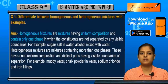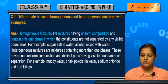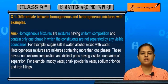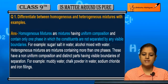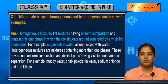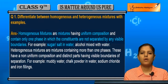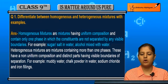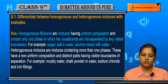You cannot distinguish the components — they all appear as one. The constituents are not separated by any visible boundary because they are very properly soluble in each other. For example, sugar or salt in water — they completely dissolve. Alcohol mixed with water is also a homogeneous mixture.